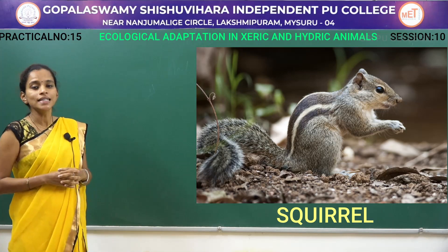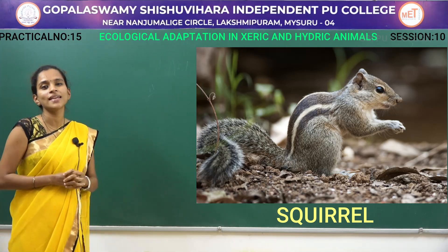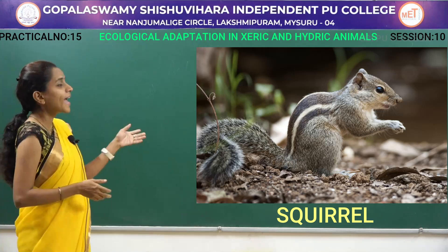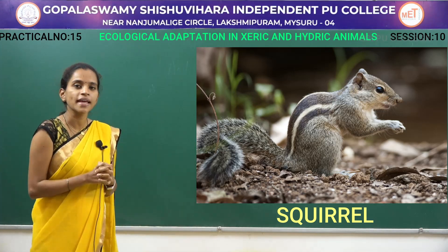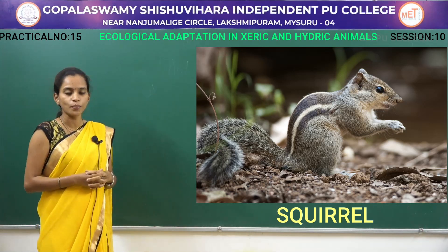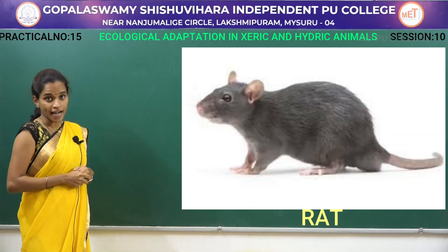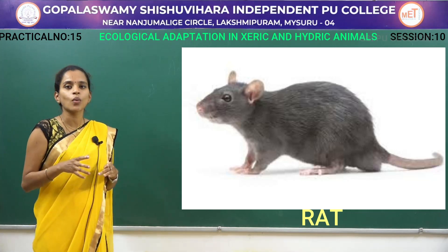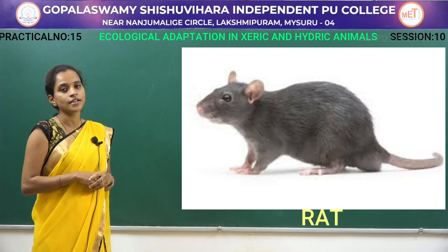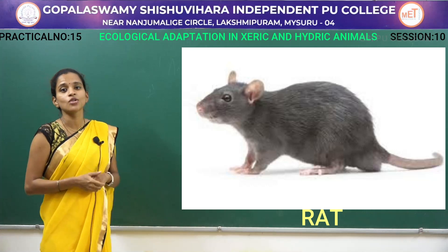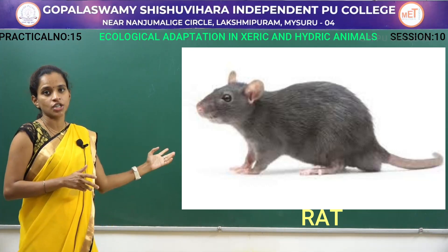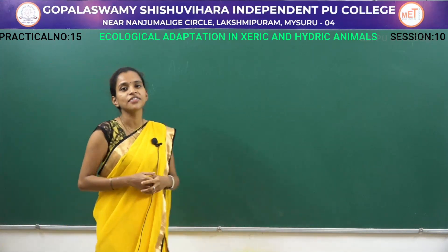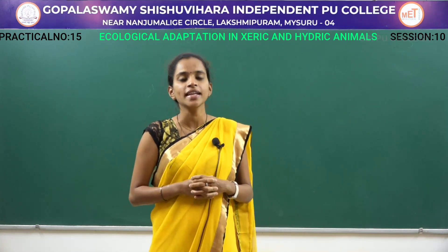The next xeric animal is the squirrel. In case of the squirrel, their basic food will be juicy fruits, meaning they consume a large number of fruits rich in water content. Next, they have protective mimicry so they can protect themselves from predators, and their limbs add to the speed of locomotion. The next xeric organism is the rat. Rats also prefer juicy, carbohydrate-rich food with high water content. They also have protective mimicry and are normally nocturnal in nature, and their limbs add to the speed of locomotion.